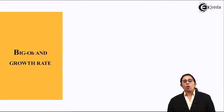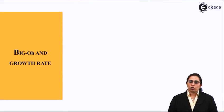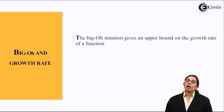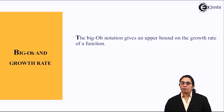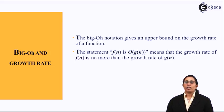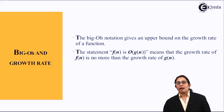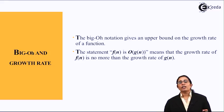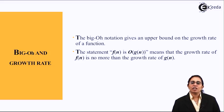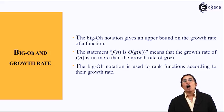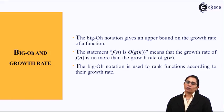Big O notation gives an upper bound on the growth rate of a function. f(n) is O(g(n)) means the growth rate of f(n) is no more than the growth rate of g(n). Big O notation is used to rank functions according to their growth rate.